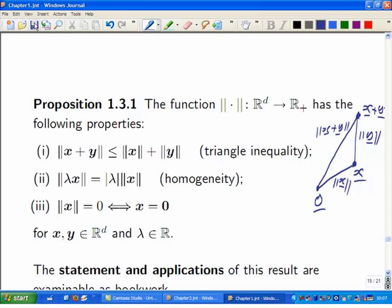The second one, so lambda is a scalar here. This is for x and y in R to the d, and lambda a scalar. Then if you multiply a vector by a constant, you might multiply the length of the vector by the same constant, except that the constant could be negative. If the constant's negative, you're not going to get a negative length. Making a vector negative preserves the length. So you want to multiply by the modulus of lambda instead.